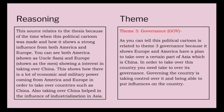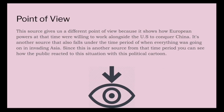This relates to Theme 3 — Governance — because as shown in the political cartoon, Europe and America had a plan to take over a part of Asia, specifically China. To take over a country, you need to take over its governance, which means controlling and putting influences on the country. This source gives us a point of view showing how European and American powers at the time were willing to work alongside each other to conquer China. Since this source is from the time period, we can see how the public reacted to the situation of invading Asia.